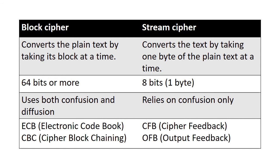The stream cipher considers one byte of data at a time. Here a key stream is produced that is combined with the plain text, typically by XORing, to produce the cipher text. The stream cipher uses CFB and OFB modes of operation.